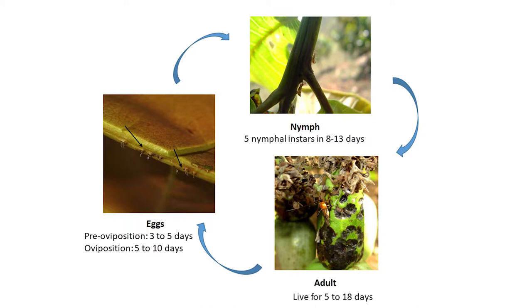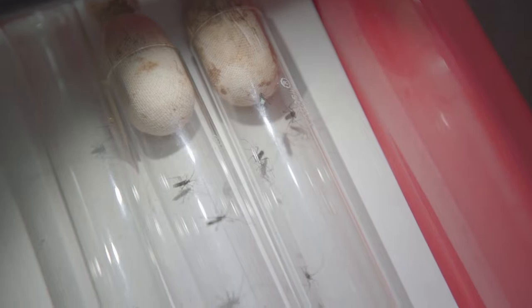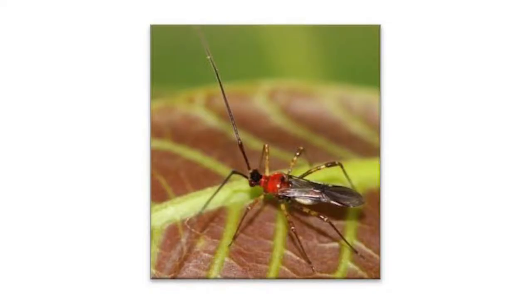Tea mosquito bug has a short life cycle and can build up population in a very short span of time. The eggs are inserted into tender shoots, stock of inflorescence, and on the leaf midrib and petioles, either singly or in groups of two to six. There are five nymphal instars which are completed in eight to thirteen days depending on weather factors. The adult bugs are slender, elongate, six to eight millimeters long, reddish brown in color with a black head, red thorax, and black and white abdomen.